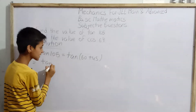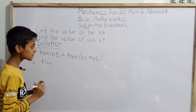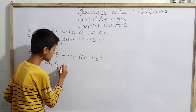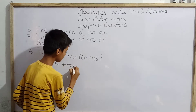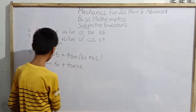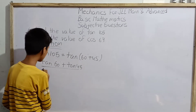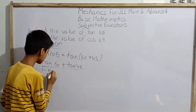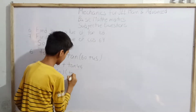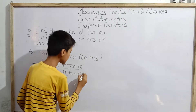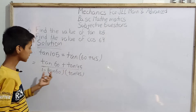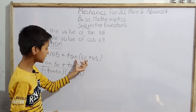When we evaluate tan(60° + 45°), by using the compound angle formula, we get: tan 60° plus tan 45°, divided by 1 minus tan 60° times tan 45°.